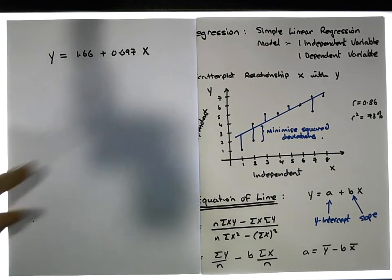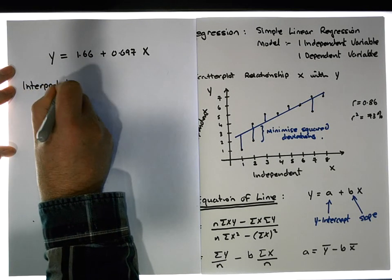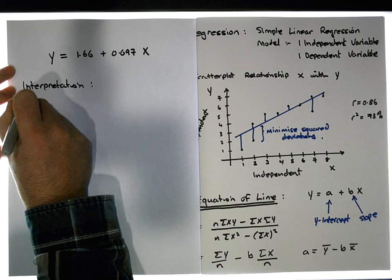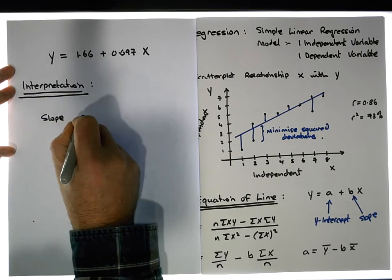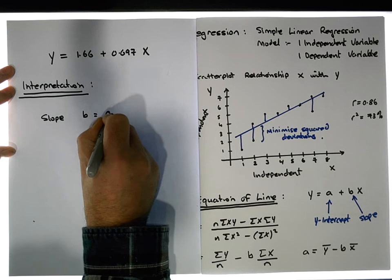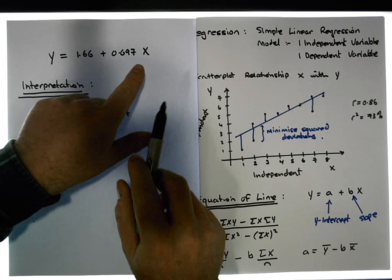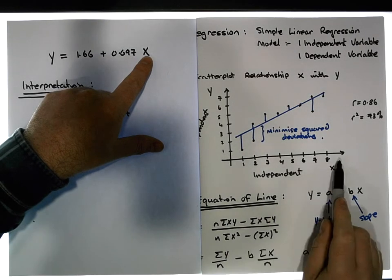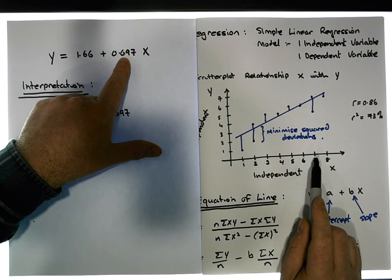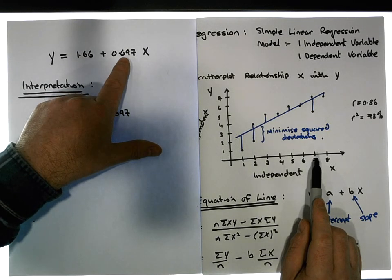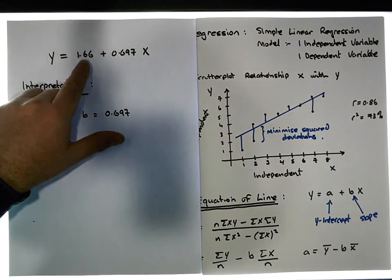So what does this really tell us? Interpretation. When we look at it from a slope perspective, the slope of the line symbolized by b is 0.697. It tells us that one unit increase in our independent variable will result in an increase of 0.697 units in our dependent variable. It's also telling us that it intersects at 1.66.